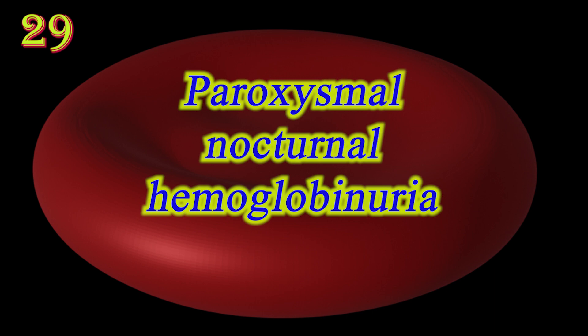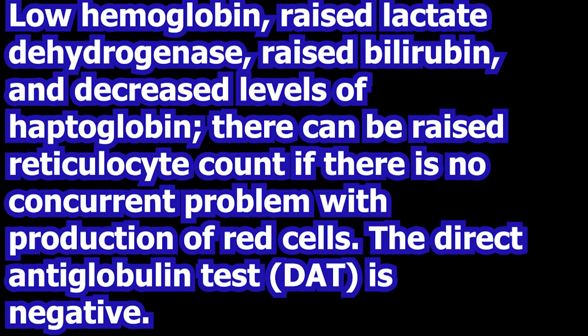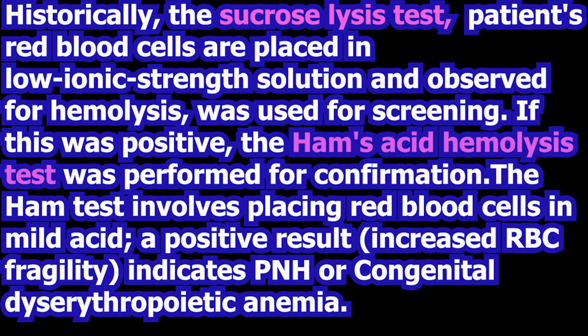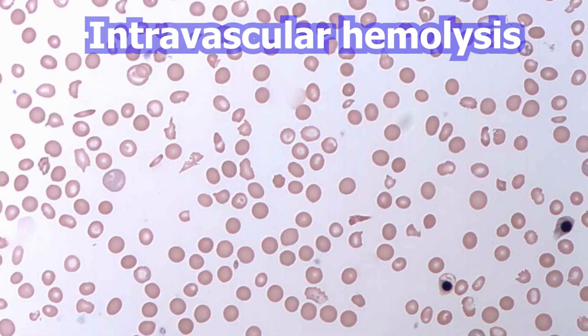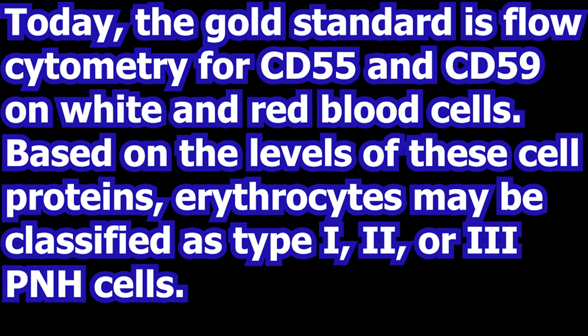Paroxysmal nocturnal hemoglobinuria is a rare acquired life-threatening disease characterized by destruction of RBCs by the complement system, a part of the body's innate immune system. This destruction occurs due to loss of RBC surface protein complement decay-accelerating factor that normally protects the RBCs.